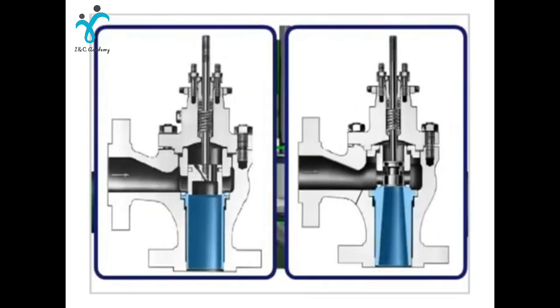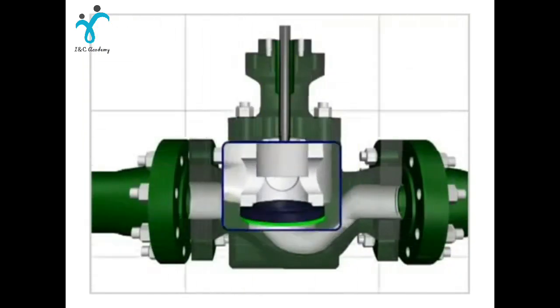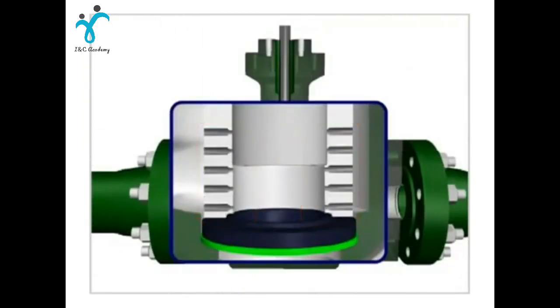Valve liners are constructed of hardened materials to protect the valve body. Pressure staging keeps the pressure from falling to near a liquid's vapor pressure, which helps prevent vapor bubbles from forming.